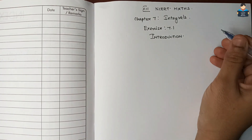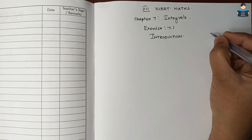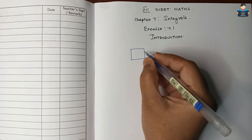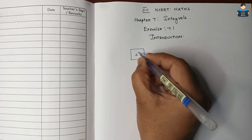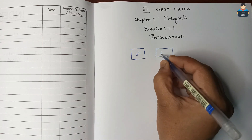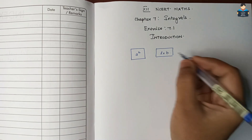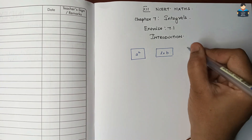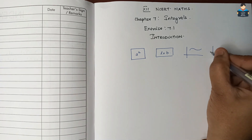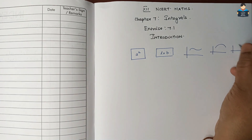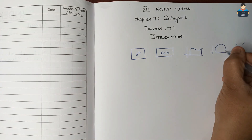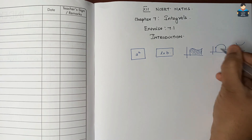To understand integrals, we first consider finding the area of a rectangle or square. We apply the formula: length multiplied by breadth to find the area of a square. But if there is a curve — somewhere like this, a curve — we need to find the area under that curve.